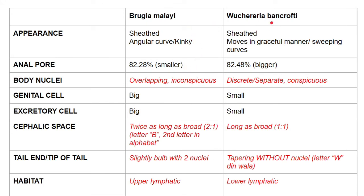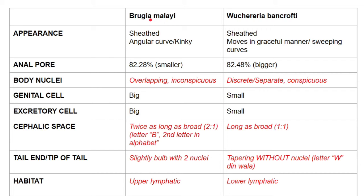Regarding morphology, Brugia malayi and Wuchereria bancrofti are very different in appearance. Brugia malayi is sheathed but moves in an angular, curved, and kinky manner. Wuchereria bancrofti is also sheathed but moves in a graceful, sweeping manner. A helpful mnemonic: all 'clean' or 'graceful' descriptions belong to Wuchereria bancrofti, while all 'messy' descriptions like kinky, angular, overlapping, and inconspicuous belong to Brugia malayi.